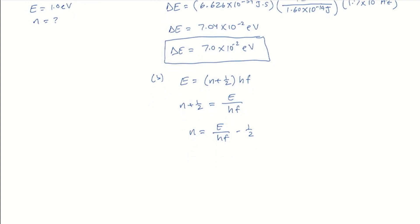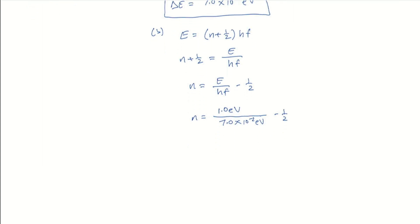The given E is 1.0 electron volts. We just found hf, right? hf is the same as delta E, so we'll just use that: 7.0 times 10 to the minus 2 eV. Then we subtract 1/2. And I found n is 13.7.